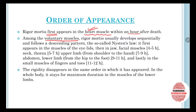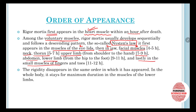Nisten's Law states that rigor mortis first appears in the muscles of the eyelids, then the jaw, then the facial muscles (taking about four to five hours), then the neck, then the thorax, then the upper limbs starting from shoulder to hand (taking seven to nine hours), then the abdomen, lower limbs, and lastly the small muscles of the fingers and toes.